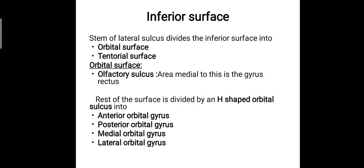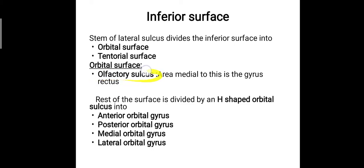Now let us move to the inferior surface of the cerebrum. The stem of the lateral sulcus divides the inferior surface into two parts: the orbital surface, which lies above the eyeball, and the tentorial surface, named in relation to the tentorium cerebelli — a subdural fold structure we will discuss later. On the orbital surface there is the olfactory sulcus, and the area medial to this is the gyrus rectus.